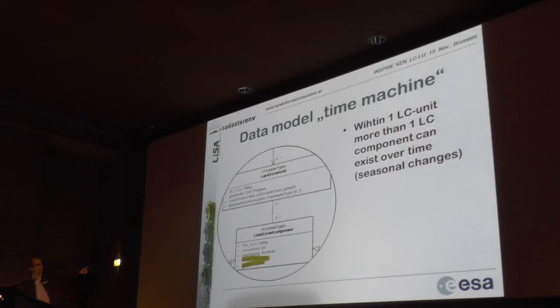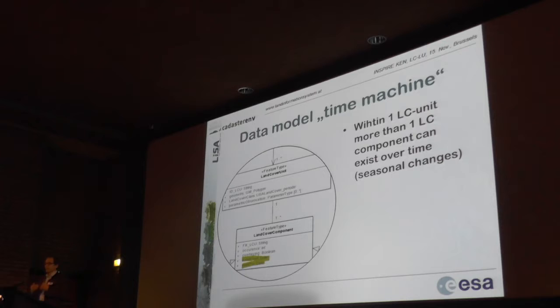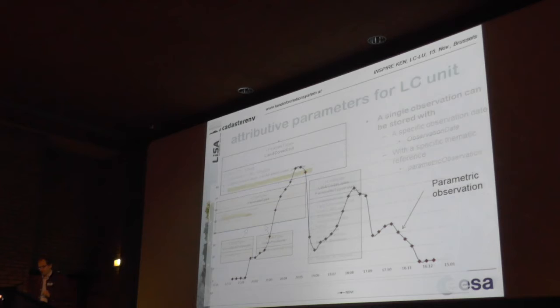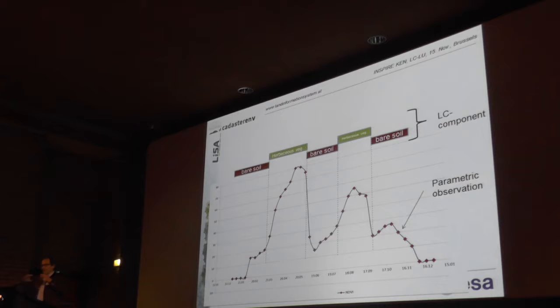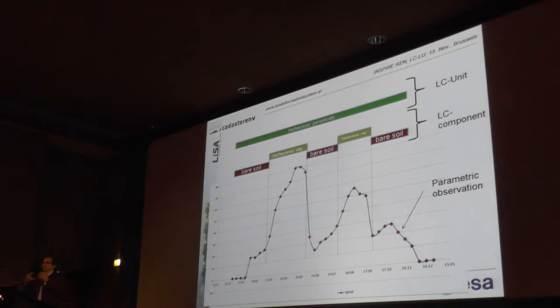This is where we need valid-from and valid-to fields. For example, if you plow a field, it will be plowed from 1st of March to end of March, and then the vegetation that is seeded will start to grow. We will have herbaceous vegetation from 1st of April to maybe 15th of June, until it is harvested. The basic idea is a kind of NDVI time series — this is what we call a parametric observation, stored in the database. We then classify this whole bank of profiles according to different land cover components, and within the unit you have a specific sequence of land cover components, which we then name periodically herbaceous or permanent herbaceous.